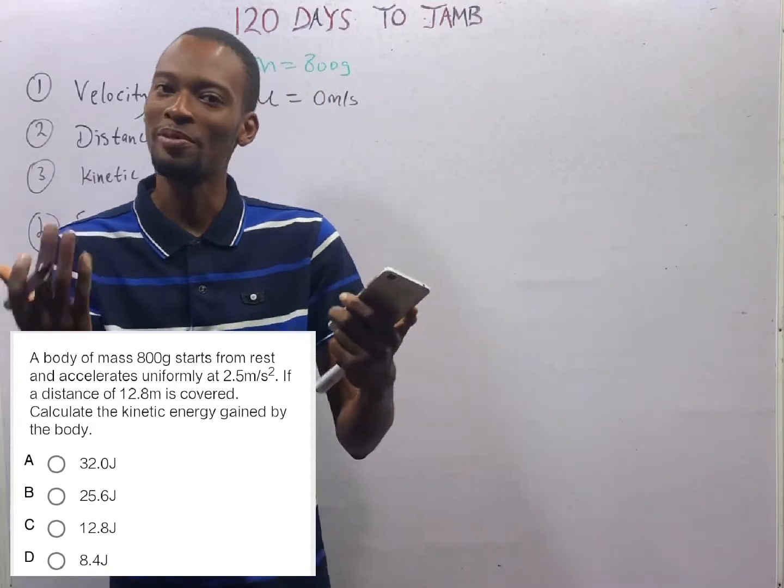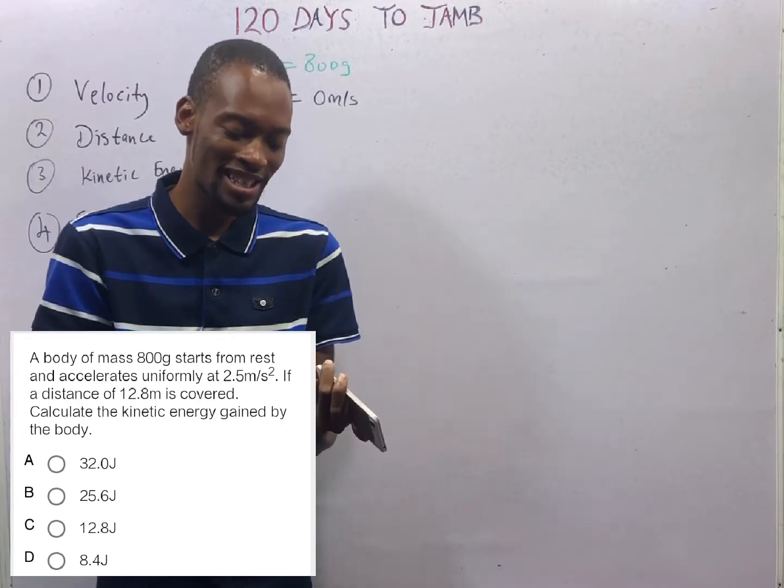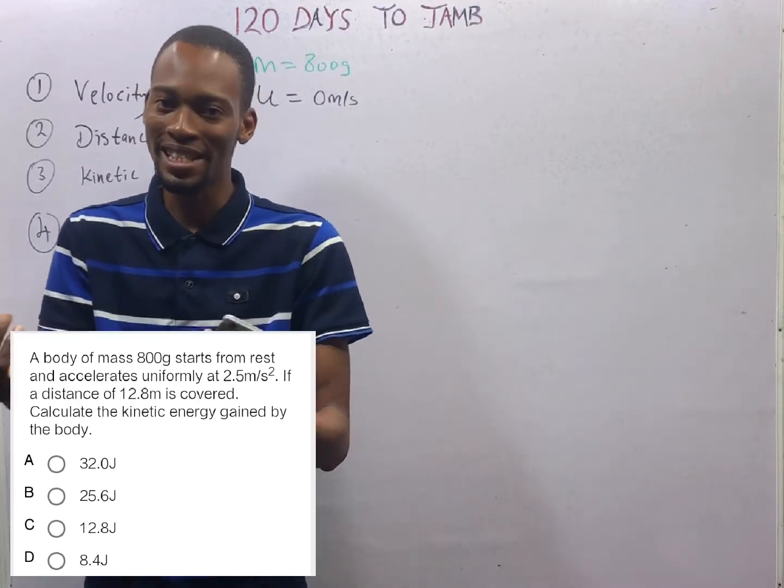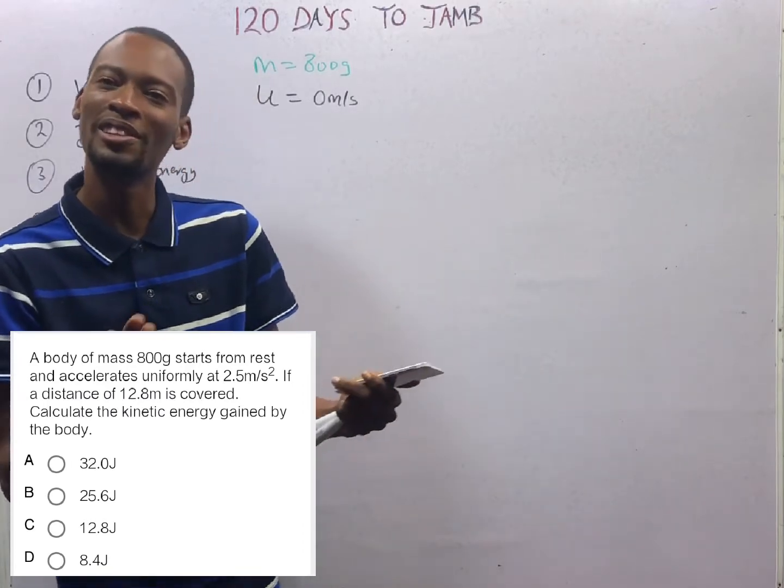Instead of just telling you initial velocity is 0, they tell you the body starts from rest. And instead of telling you final velocity is 0, they tell you the body goes to rest. We know all these tricks.